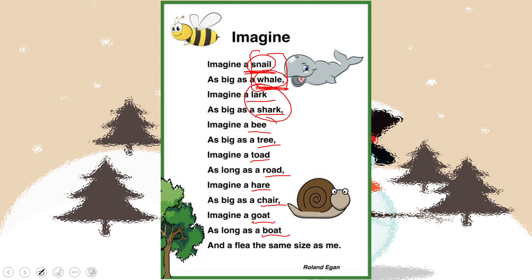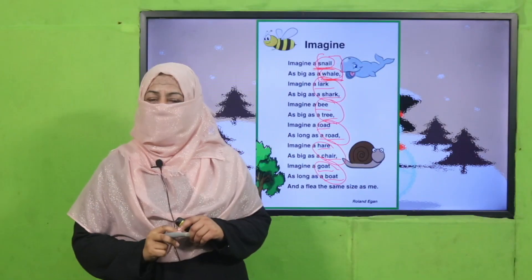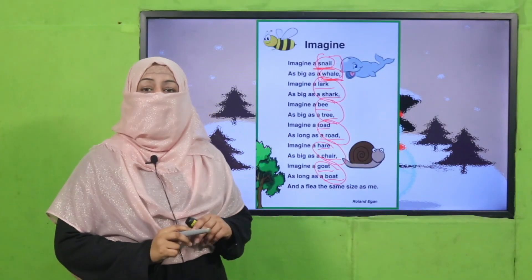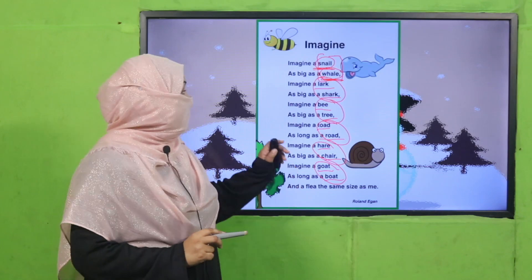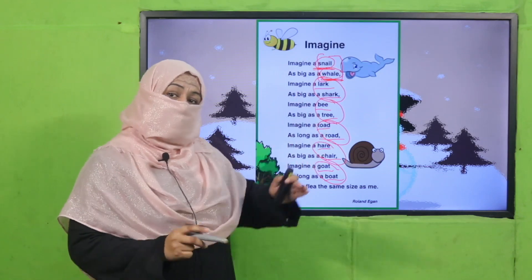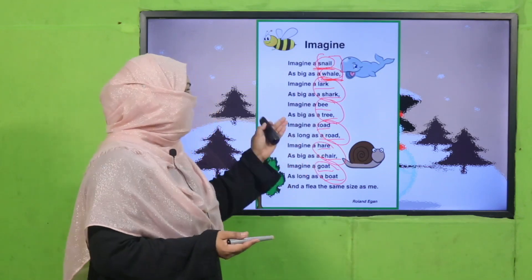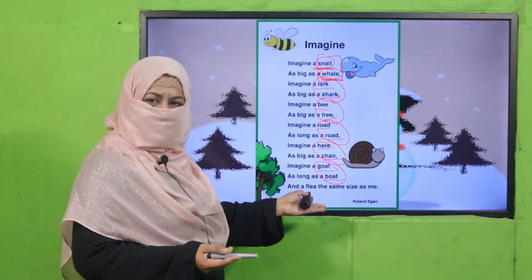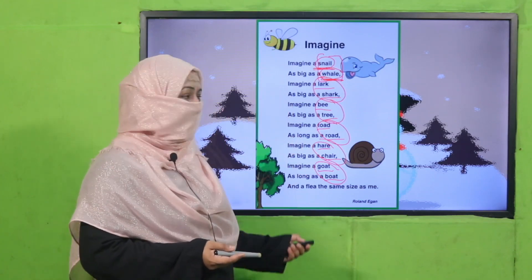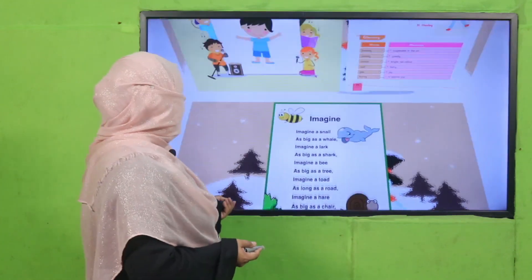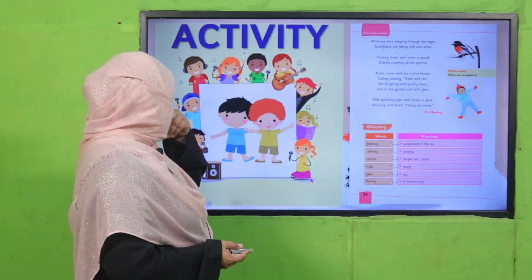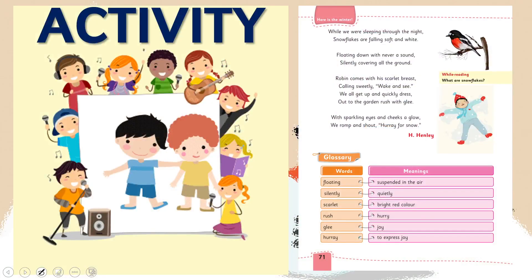This is how we identify rhyming words in a poem, and by using these words we can make another poem as well. So this is how we identify rhyming words. Are you clear? Let's practice through an activity.